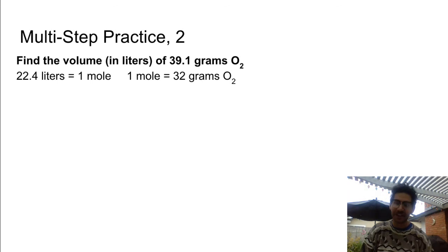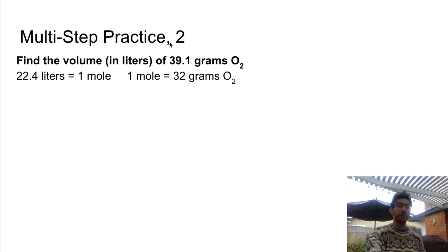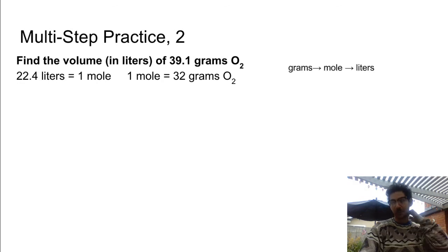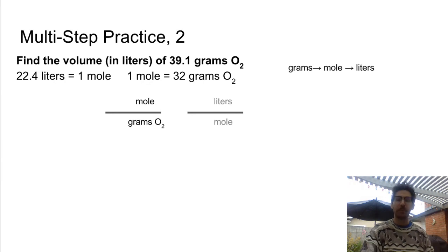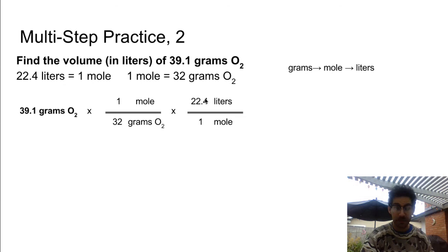Try this conversion — pause the video. We're converting 39.1 grams of oxygen to liters. Game plan: grams → moles → liters. First fraction: moles on top, grams on bottom. Second fraction: liters on top, moles on bottom. Numbers: 1 mole per 32 grams, 22.4 liters per 1 mole. Calculate: 39.1 times 1/32 times 22.4/1 gives 27.4 liters.